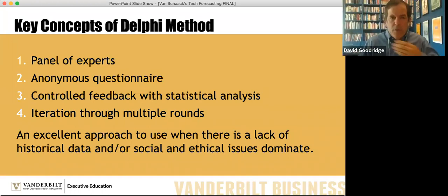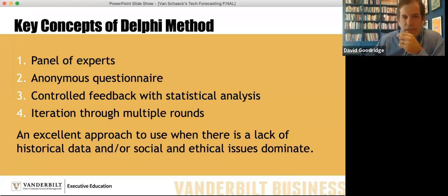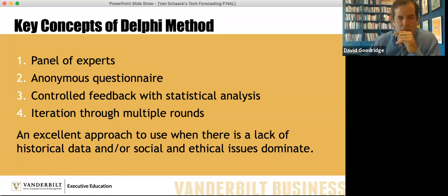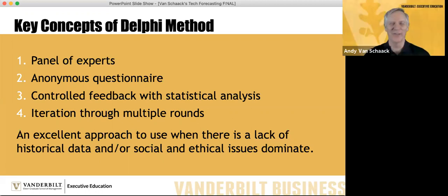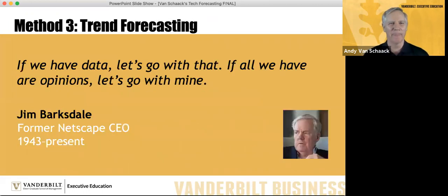Delphi would be an excellent approach for hospitality or other areas where there's a lack of historical data, where trends are changing, or where social and ethical issues dominate. We're halfway through — our next method is trend forecasting, and we've got a unique one. I don't want to stump you, but I kind of do: architecture. Let's look at architecture as we go through trend forecasting.